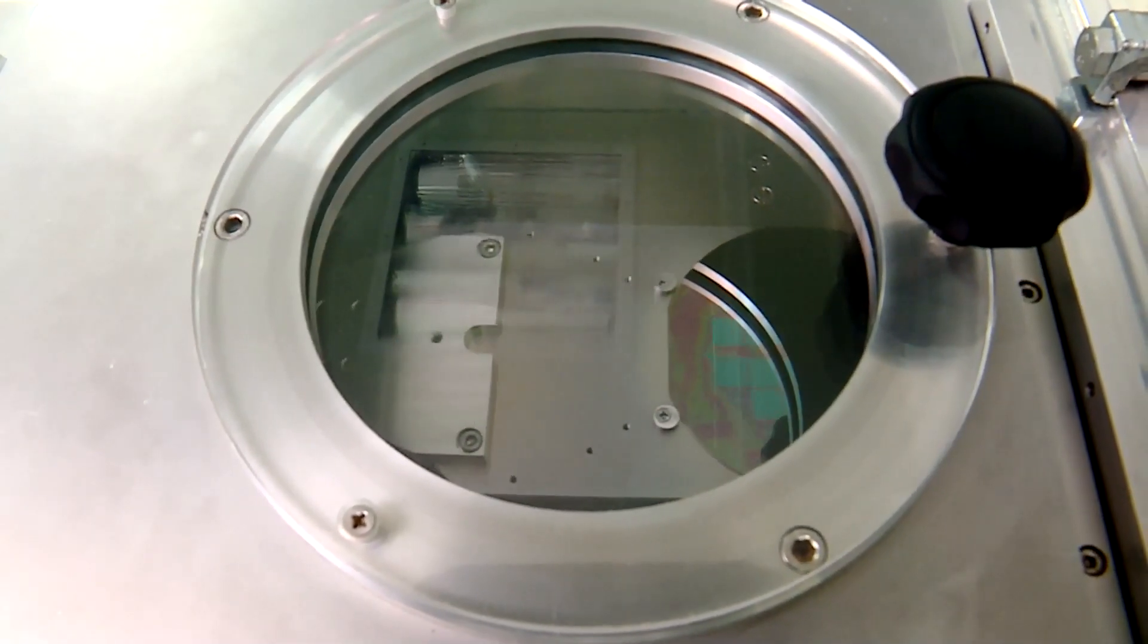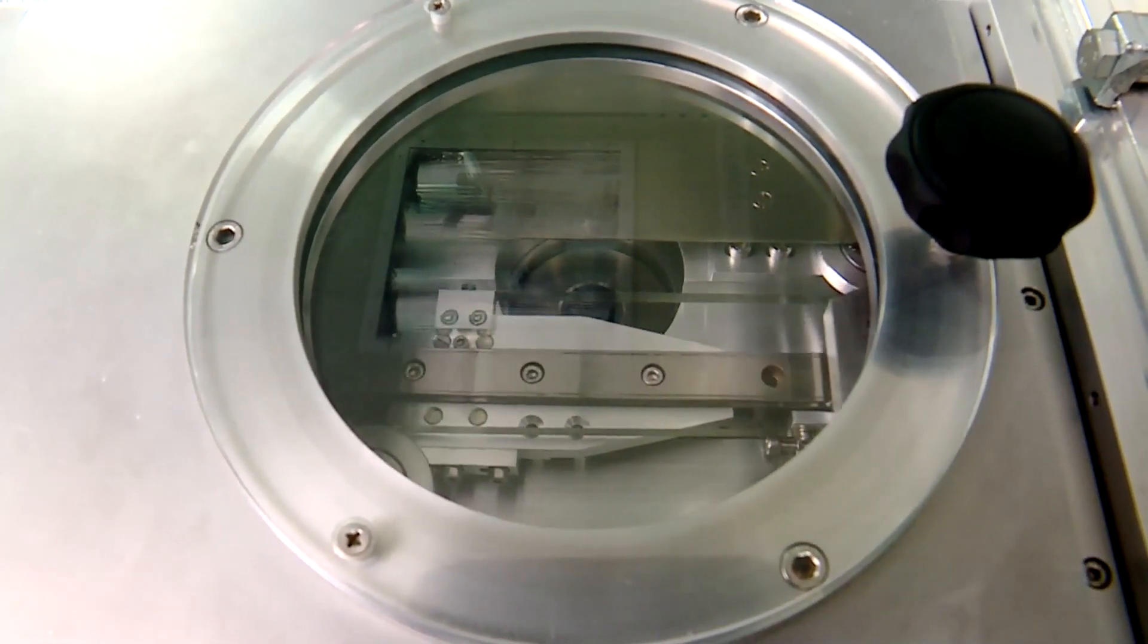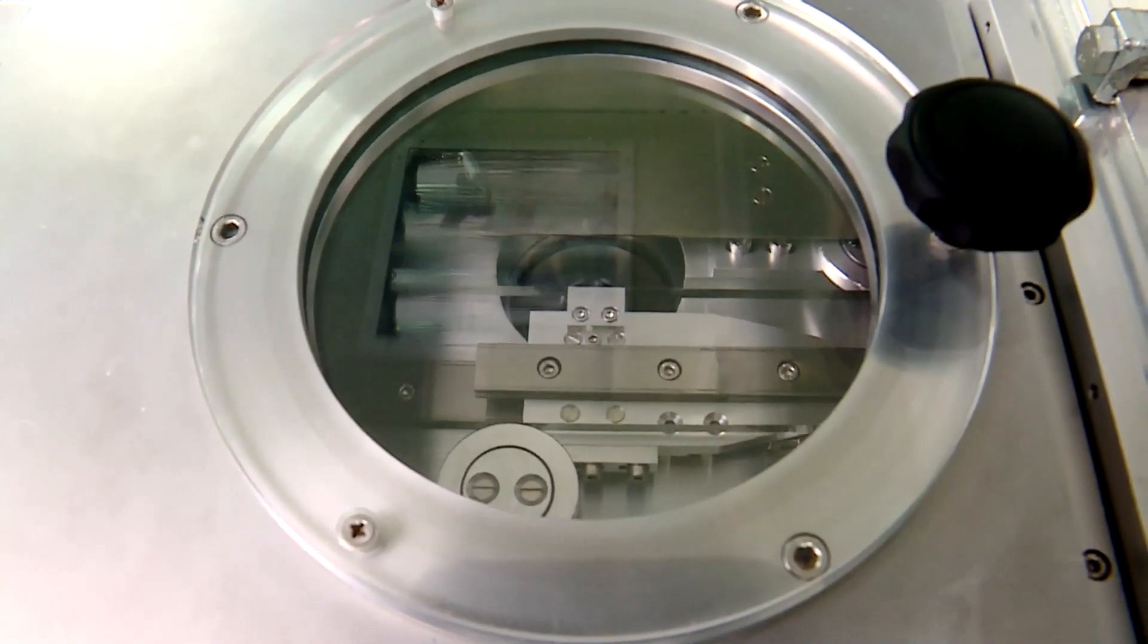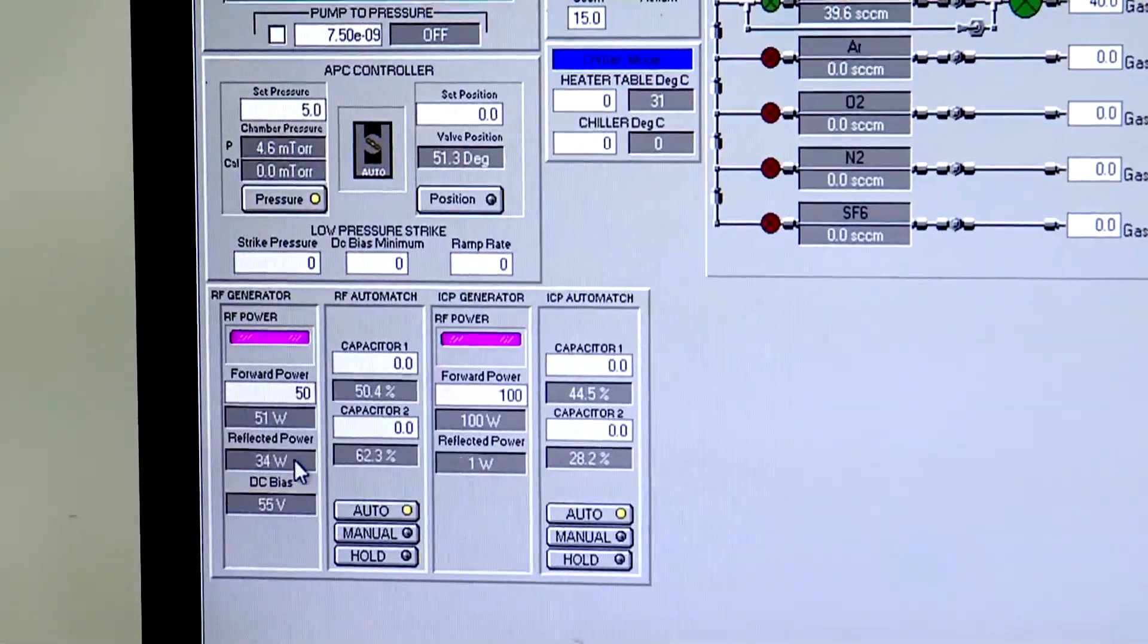This reactor door in between will open and this arm is going to push our sample inside. The sample will be placed on an electrostatic chuck in the chamber.